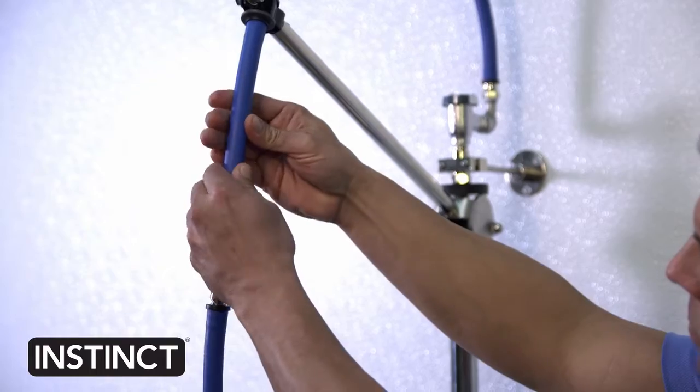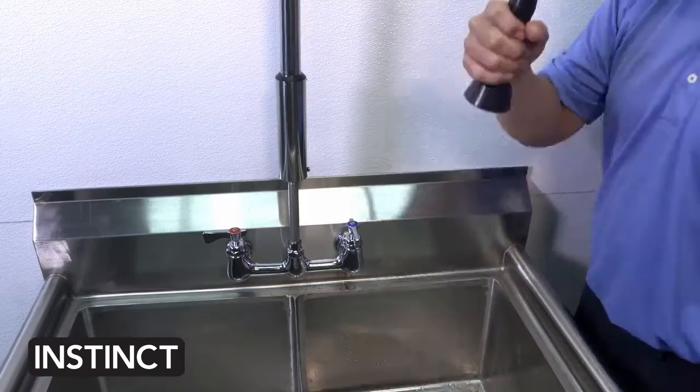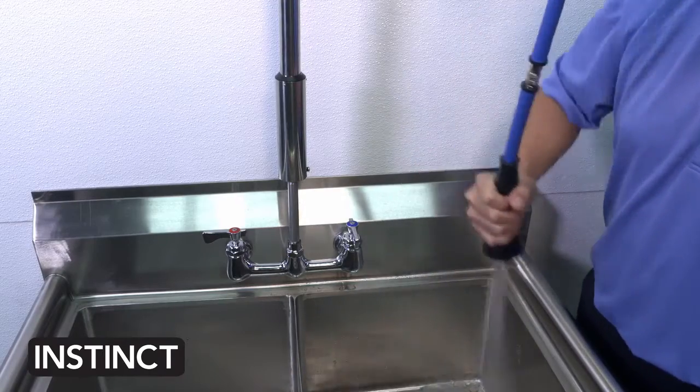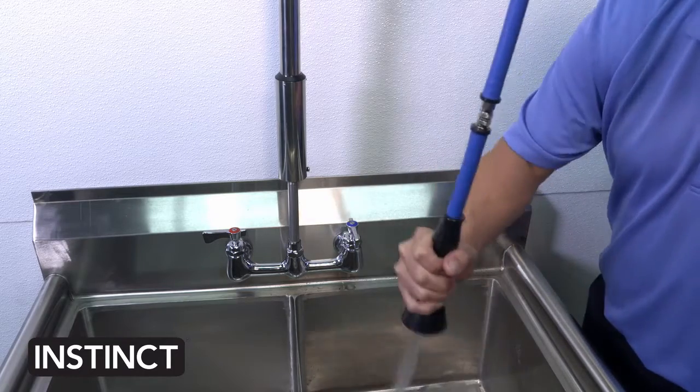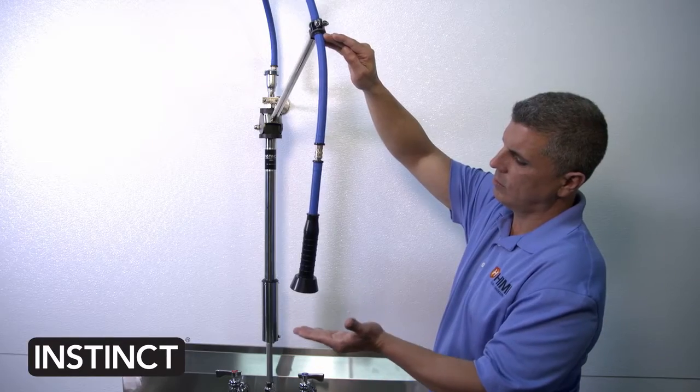The hose also features a nylon braided push lock system for a stronger hold for strenuous operation, and it's available in two hose lengths, 54 and 60 inches long.